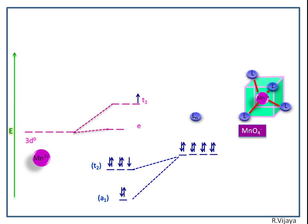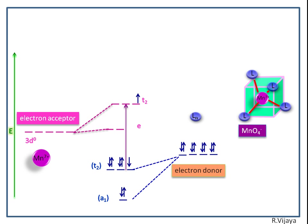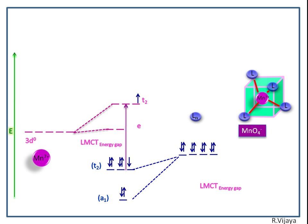This type of transition is known as ligand-to-metal charge transfer (LMCT) transition. Here the ligand acts as donor and the metal ion acts as electron acceptor. The energy gap between these two orbitals is known as the LMCT energy gap — that is, the ligand-to-metal charge transfer energy gap.